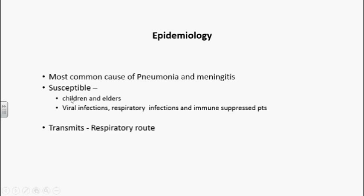Epidemiology: Streptococcus pneumoniae is the most common cause of pneumonia and meningitis in adults. Most susceptible individuals are children as well as elderly individuals. People who are more susceptible include those suffering with viral infection, any other respiratory infection, or immunosuppressed individuals. Transmission is mainly by the respiratory route. Pneumonia and otitis media are widely seen in the human population when compared to meningitis.